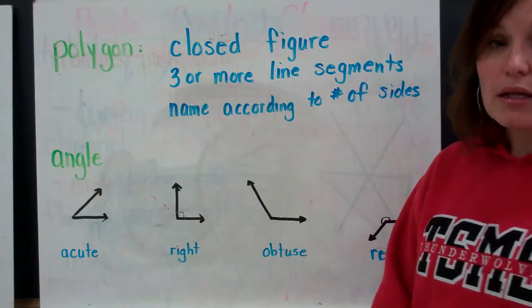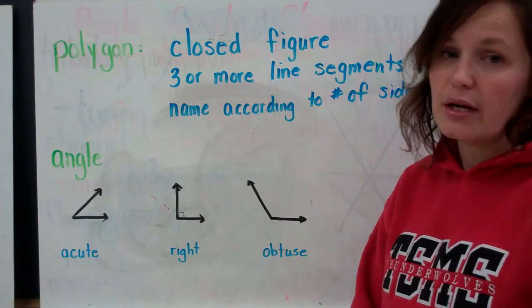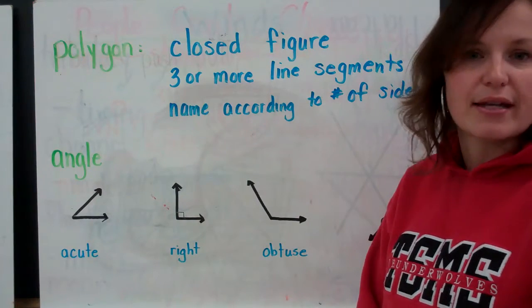So first, a polygon. A polygon is classified as a closed figure. It must have three or more line segments, and we name our polygons based on the number of sides it has.